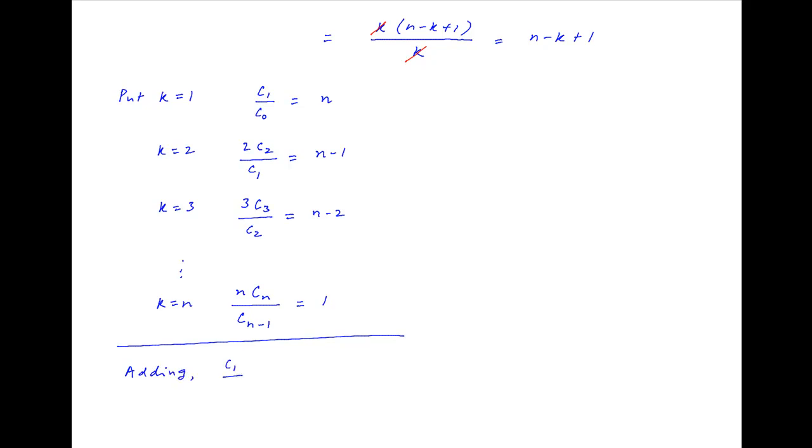on the left hand side we have the given series c1 upon c0 plus 2 times c2 upon c1 plus and so on, the last term being n times n choose n upon n choose n minus 1.